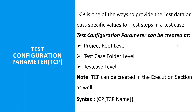With TCP, you can either pass the test data or provide the test data. Test data is nothing but the values like username and password. Or you can pass specific values — for example, specifying that a particular test case has to run in Chrome or Firefox. TCP can be used for both.